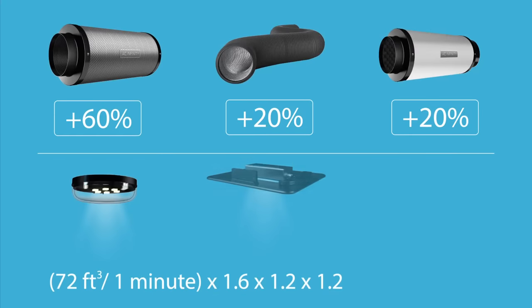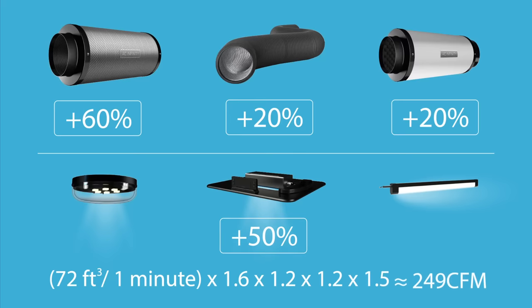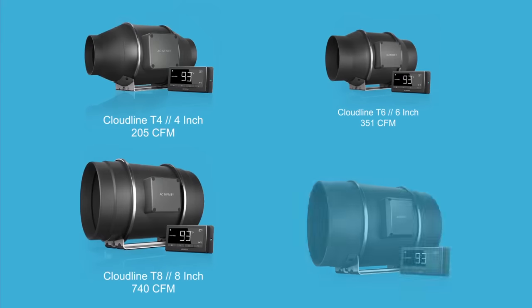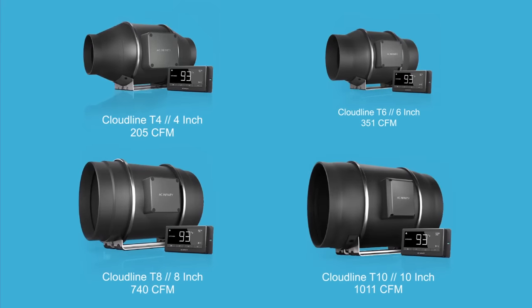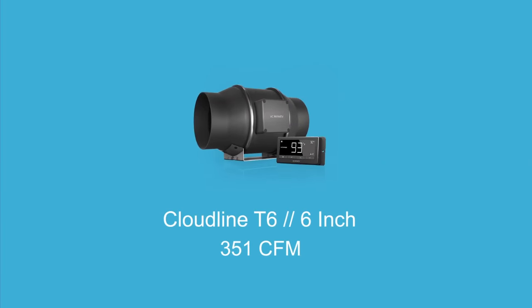Other accessories, such as lighting, will heat up your grow space, requiring up to a 50% increase in CFM to negate rising temperature increases. When shopping for a fan system, we recommend picking a model that has a greater CFM rating than the minimum figure you calculated. This will allow the fan to run quieter at a lower speed, and account for future grow space changes.